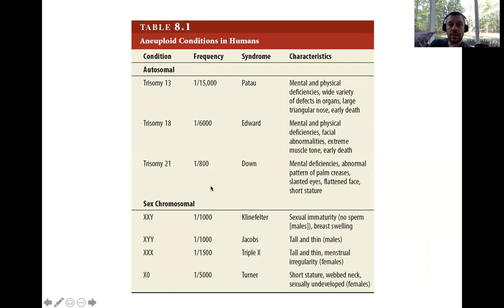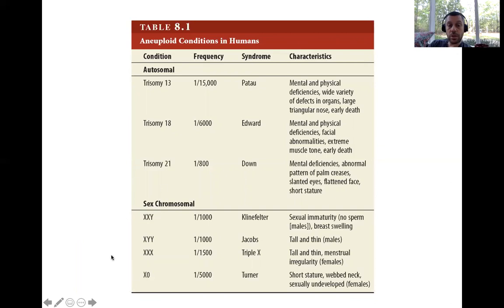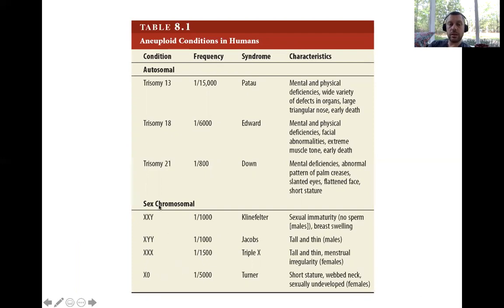There are other aneuploid conditions in humans besides trisomy 21. There are two other relatively common trisomies — chromosomes 13 and 18 — again the smaller chromosomes. There are also trisomies of sex chromosomes. There's a bit more flexibility with sex chromosomes because of X inactivation, and because you can survive just fine with two or one X chromosomes. So there are some interesting chromosomal disorders that just involve the sex chromosomes.